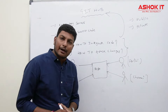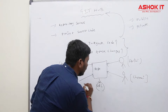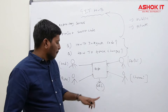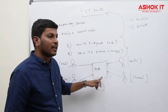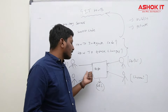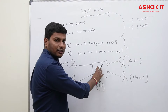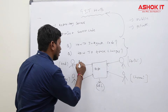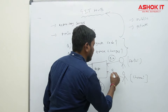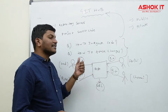When we create a repository, for every repository one repository URL will be generated. We need to share that URL with our team members. By using that URL they can connect to the repository, store their code, take code from it, and see the history of commits. To communicate with Git repositories, we install Git client software on every team member's computer.